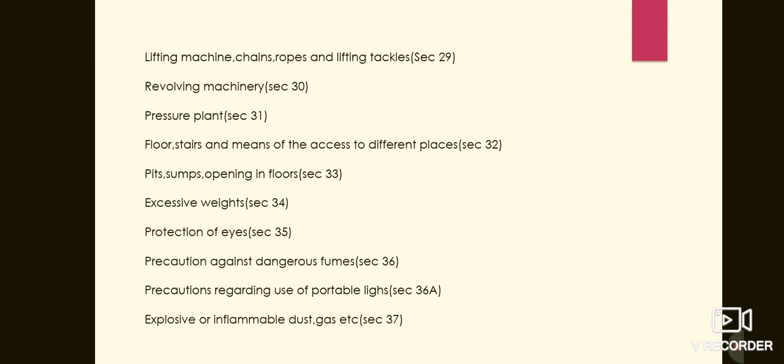This is discussed in session 29. Factory cranes and other lifting machines such as crabs, winch, pulley block etc. shall be of good construction, sound material and adequate strength, properly maintained and thoroughly examined at least once a year. Lifting machine chains, ropes and lifting tackles must be kept in good condition.